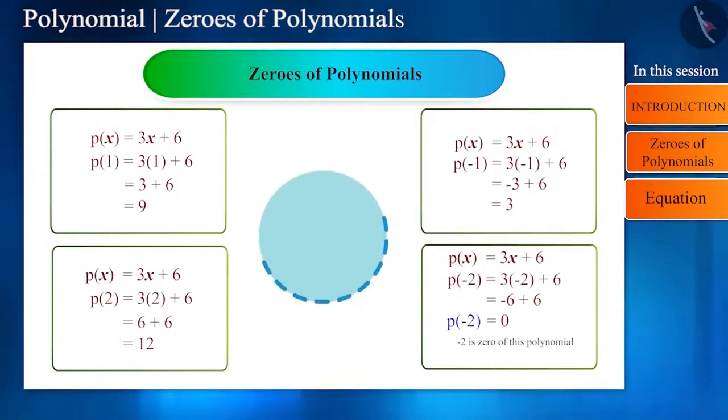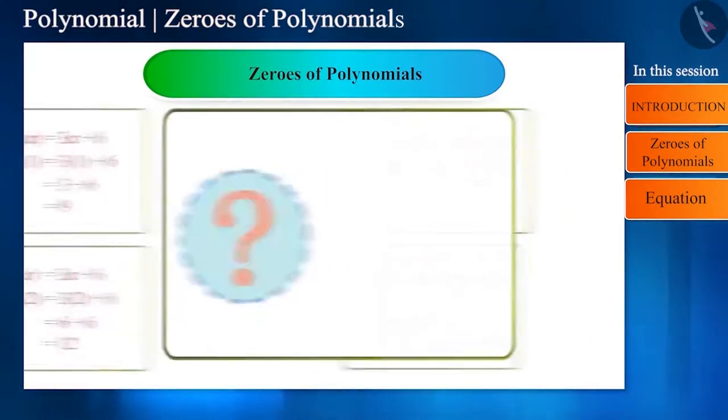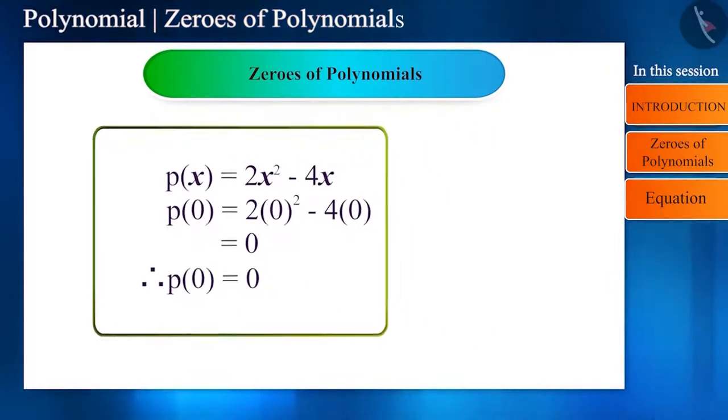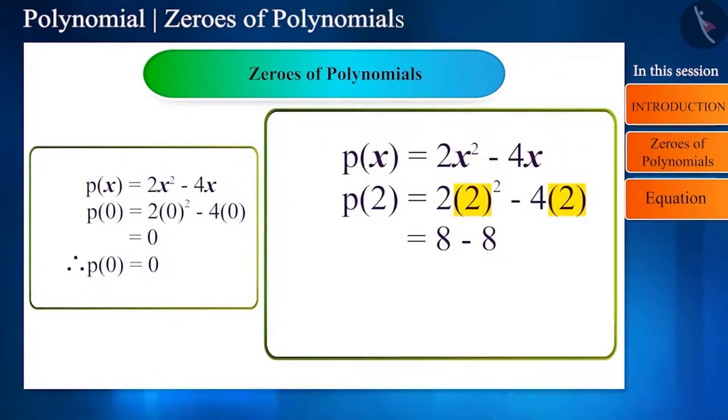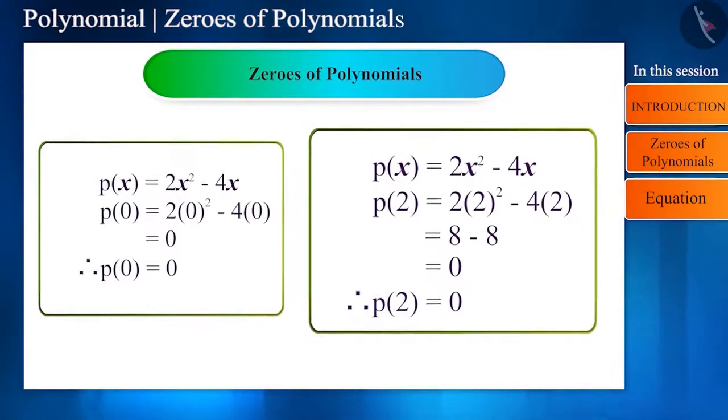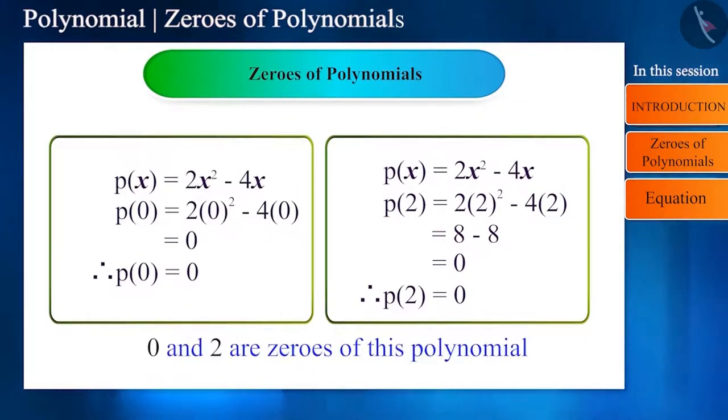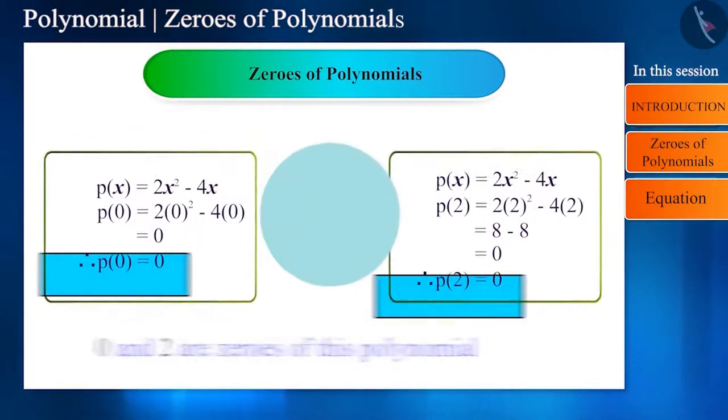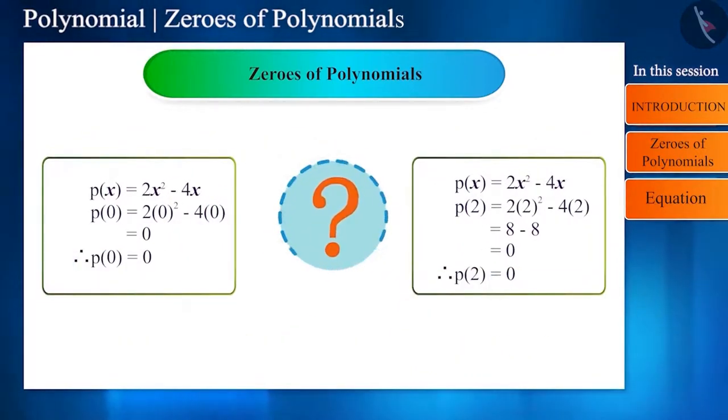Friends, can you think of another number for x so that the value of this polynomial is zero? Similarly, in the second polynomial, the value of polynomial becomes zero on substituting x with zero and two. That is, this polynomial has two zeros: one is zero and the other is two. Can you find any other number besides these two numbers so that the value of this quadratic polynomial is zero?